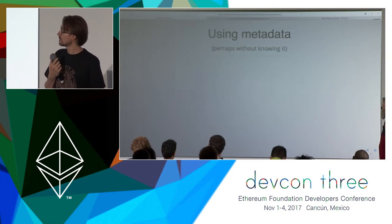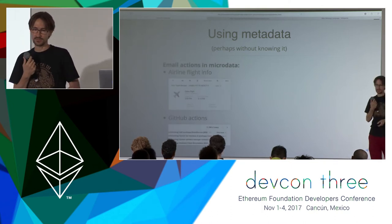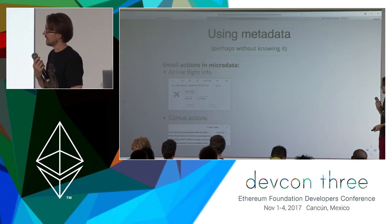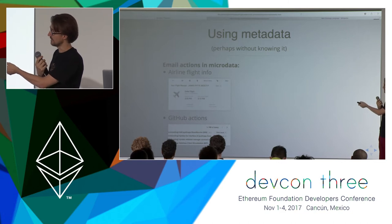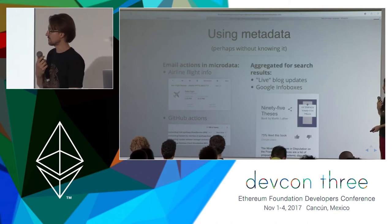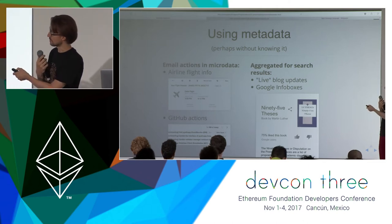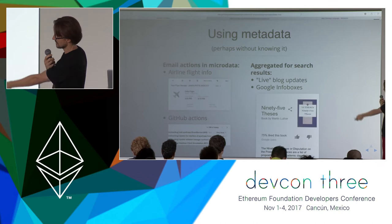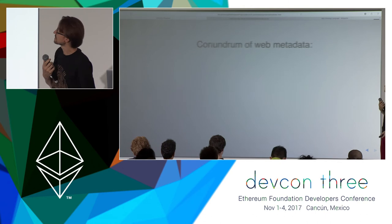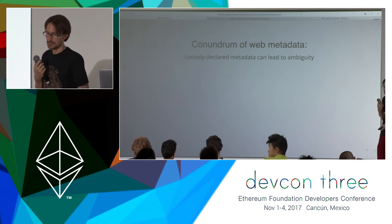We often use metadata without really realizing it. For example, the emails you receive in Gmail about your flight actually contain metadata microdata tags, and that's what Google uses to generate flight info. When you do search results, you'll see these little info boxes — Google grabs data from various places and creates a summary much like Wikipedia. Those are called info boxes.